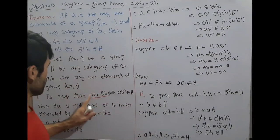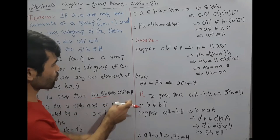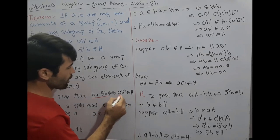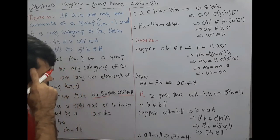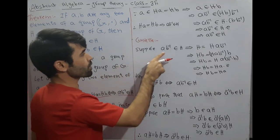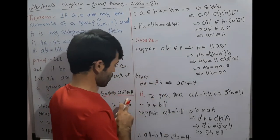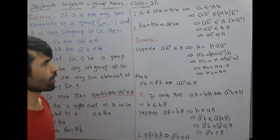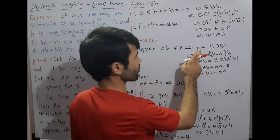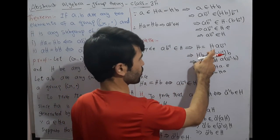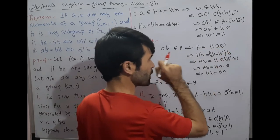Converse of the theorem: Now we assume the right side is true. Suppose a·b⁻¹ belongs to H. We prove the left side. Since a·b⁻¹ belongs to H, this implies H = H·a·b⁻¹.